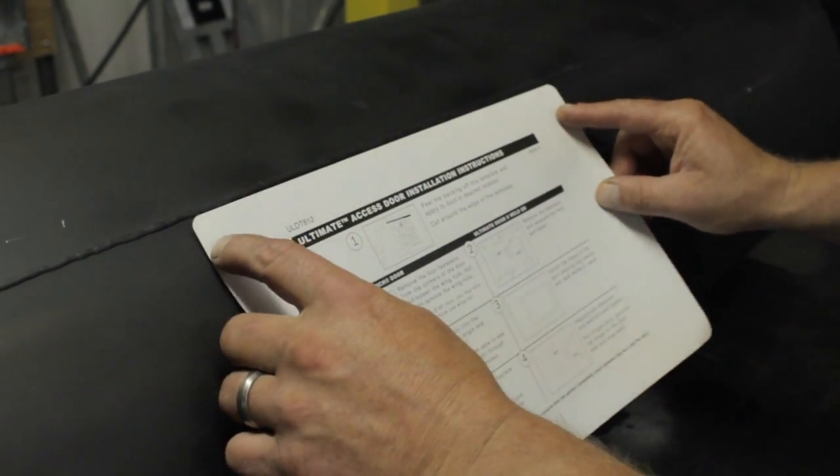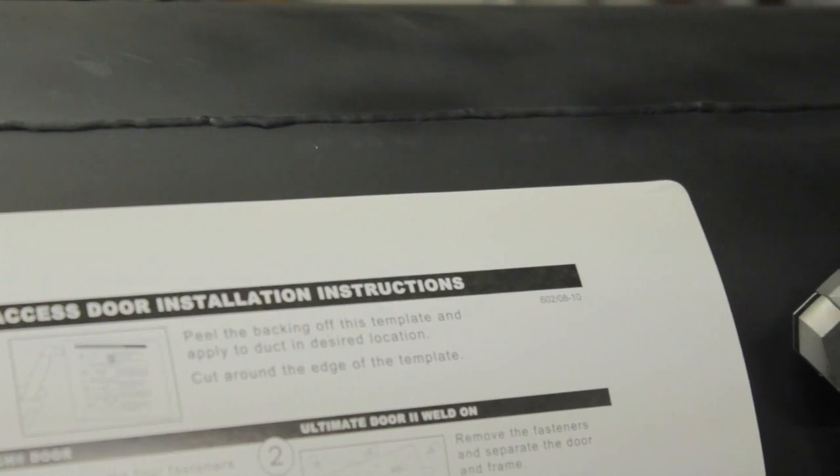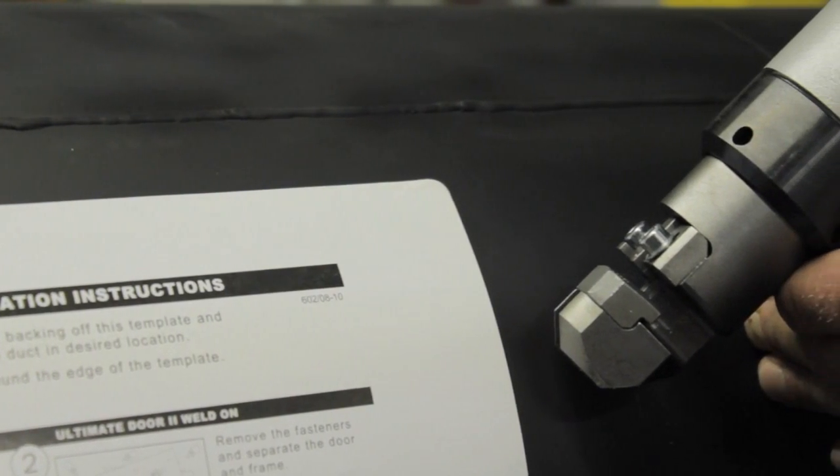The door frame extends one inch around the opening. Therefore, a minimum of one inch clearance is required on either side of the welded seam. Cutting the opening too close to the welded seam may lead to leakage.